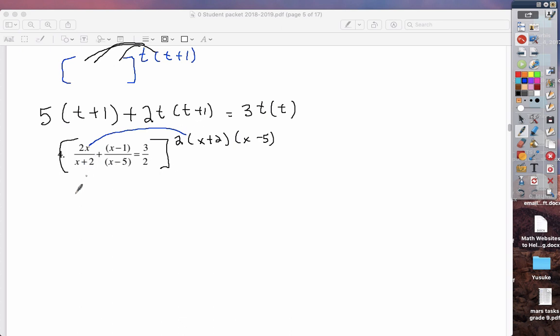So here, the x plus 2's cancel. So our numerator becomes 2x multiplied by 2, and the x plus 2's canceled. x minus 5, however, also needs to multiply this numerator. Then, the numerator is x minus 1. Keep it in brackets. Here, the x minus 5's will cancel, but we still have a 2 and an x plus 2. Equals. On the right-hand side, 3. The 2's now cancel, but we still need an x plus 2 and an x minus 5.